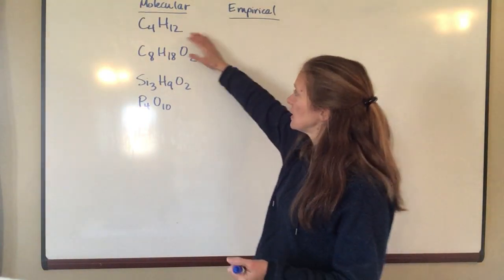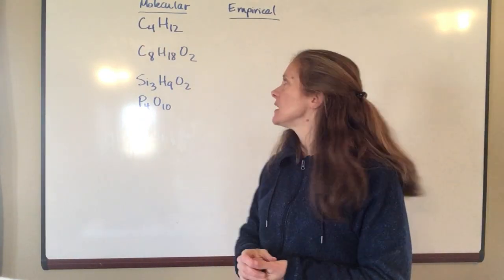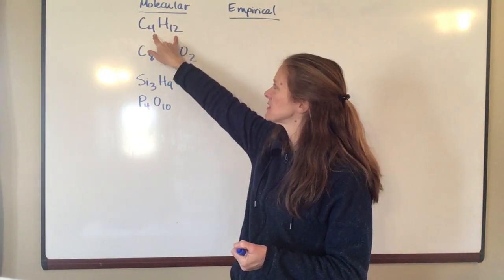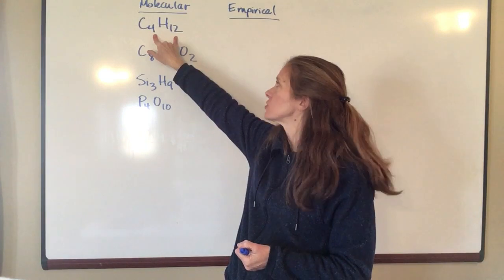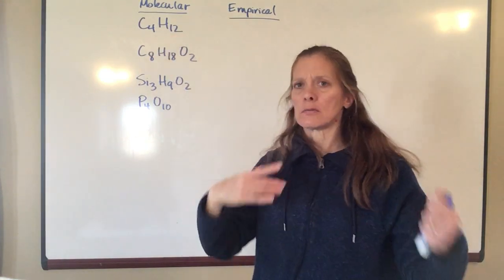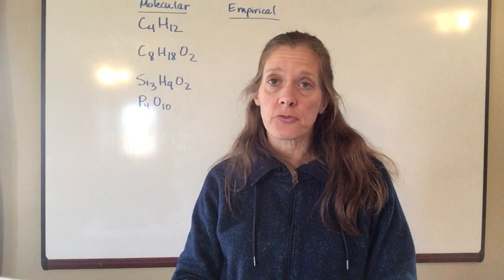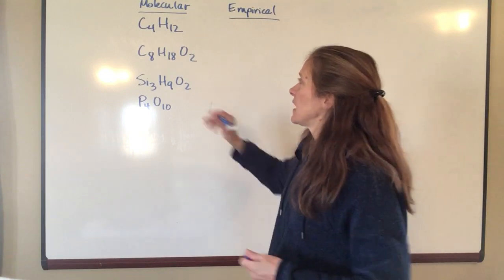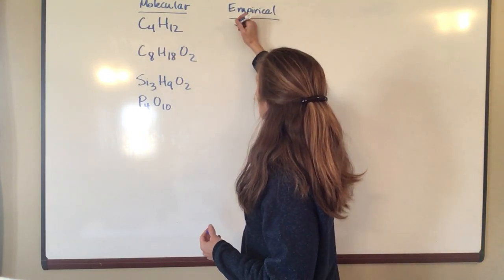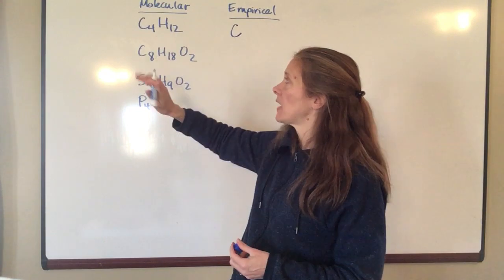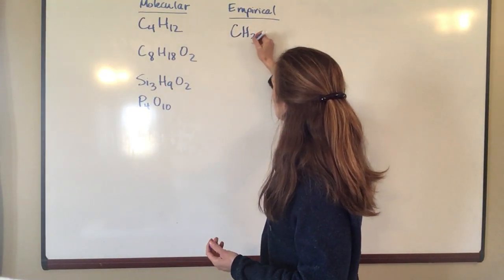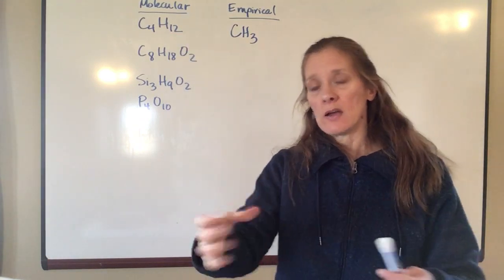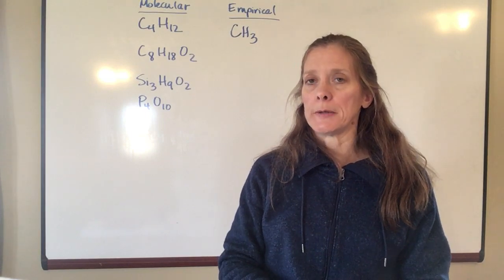We'll do a couple of examples here. The very first example I've got is C4H12, and with that particular example, if I look at the subscripts, I have a 4 and a 12. Well what is the biggest thing that I can divide both 4 and 12 by? Well 4 will go into both of those. So if I take 4 and divide it by 4, I just get 1. If I take 12 and divide it by 4, I get 3. So the empirical formula for this compound is going to be CH3. All I did is take the numbers and reduce them down to the lowest possible ratio.